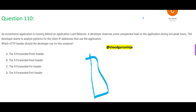Now, what has happened? You as a developer are saying that you have a non-peak hour. For example, if you are maintaining a US-based application in India, the afternoon hours — say 1 p.m. to 5 p.m. — are non-peak hours. But there you are seeing unexpected load. Something is suspicious, and what you have to do as a developer is analyze patterns for client IP addresses that use the application — which IPs are accessing it and causing an unexpected load.